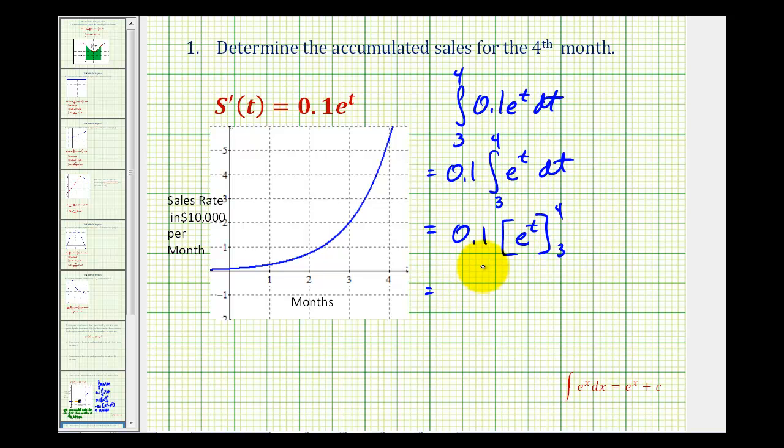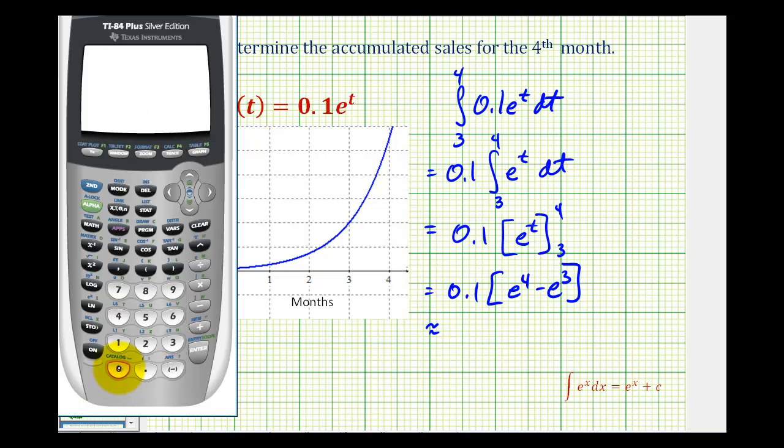Now we'll replace t with four, and then t with three, and then determine the difference. So we'll have e to the fourth minus e to the third. And now we'll go back to the calculator. So it's approximately three point four five one.